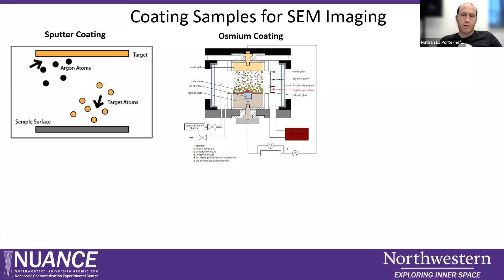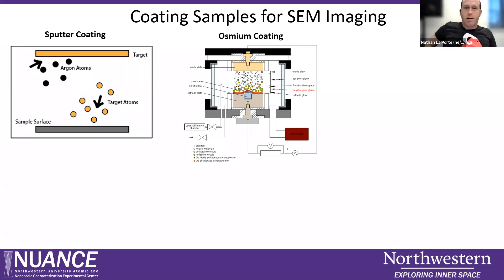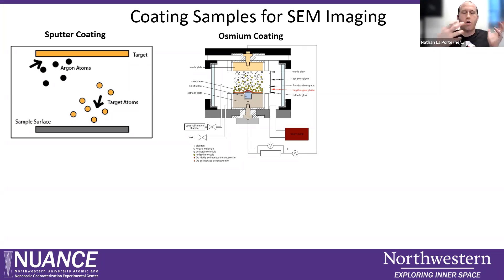The other coater that we have is the osmium coater. Essentially, the way it works is it sublimates osmium tetroxide from the sublimation chamber, which goes into the sample chamber. Then there's a plasma discharge that reduces that osmium tetroxide down to osmium zero, and that osmium zero then coats your sample and is conductive. What's cool about the osmium coater is that if you have a sample that's very porous or reticulated or has a lot of surface area, because the osmium tetroxide is coming in as a gas instead of as ballistic atoms like in the sputter coater, it can actually coat all the ins and outs of your sample and do a really good conformal job.